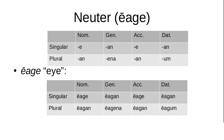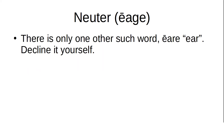Our example word is Are, which means 'eye.' So we have: Are, Aran, Are, Aran; Aran, Arena, Aran, Arum. Decline it yourself — pause the video.